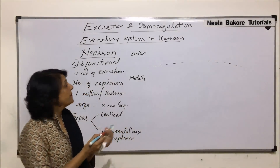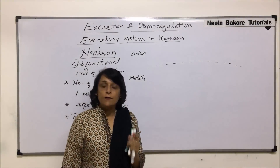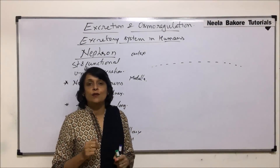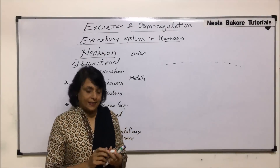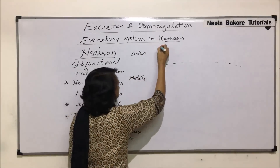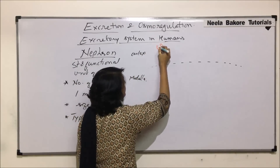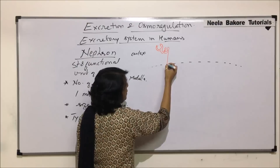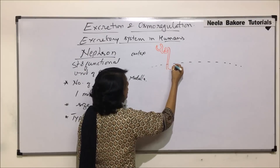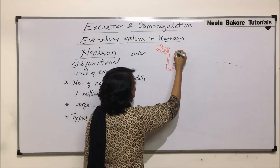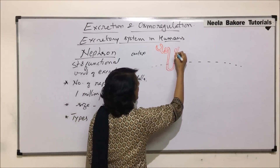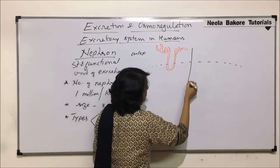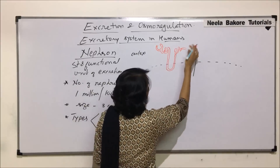In case of cortical nephrons, as we know that a nephron has a cup-like structure known as Bowman's capsule, then there is proximal convoluted tubule, then loop of Henley, distal tubule, and they open into collecting ducts. In cortical nephrons, the Bowman's capsule is in the cortex, the proximal convoluted tubule is also in the cortex, the loop of Henley is not very long and only a little part comes into the medulla. The distal convoluted tubule is again in the cortex, and they open into the collecting duct.